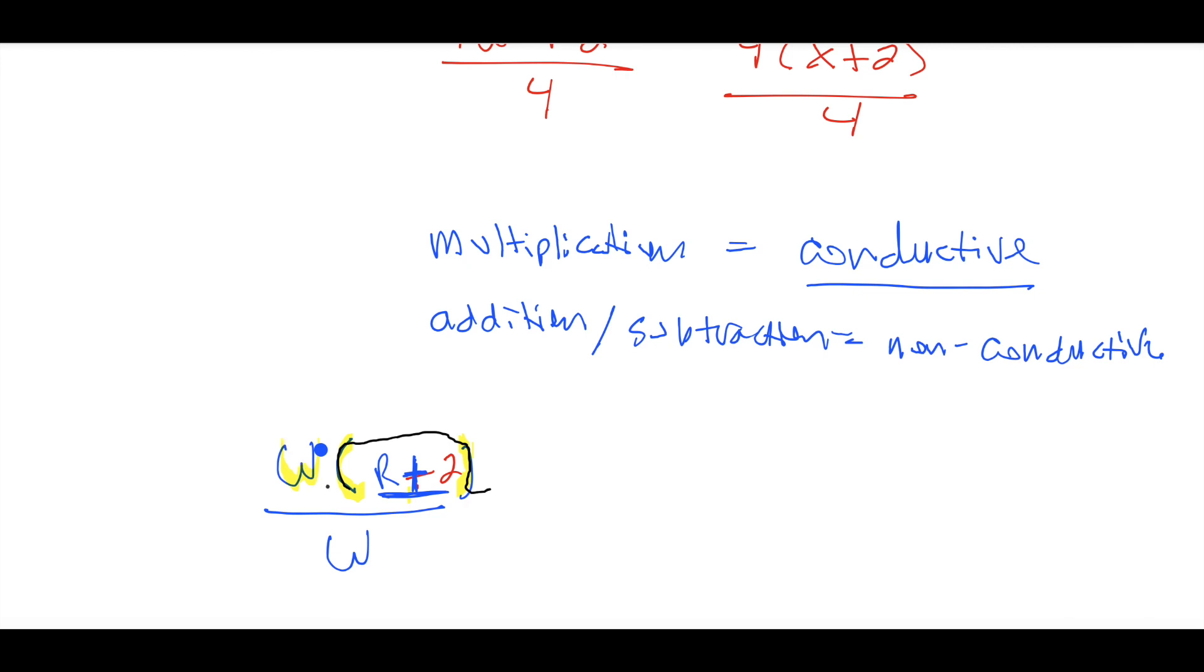That means you can wipe this out as long as you treat these things as complete variables. So like this is an entire thing that's conductive together, you can wipe. But you cannot do that.